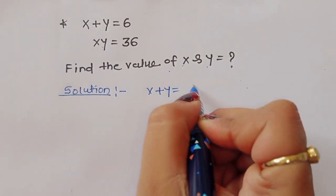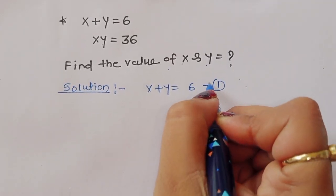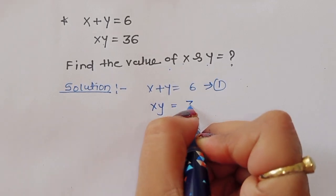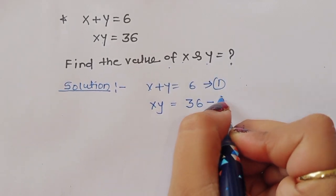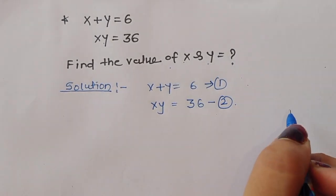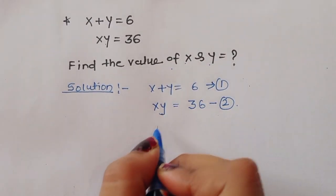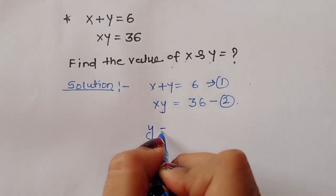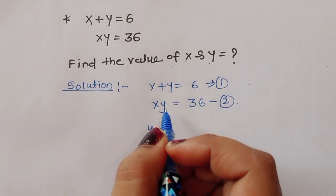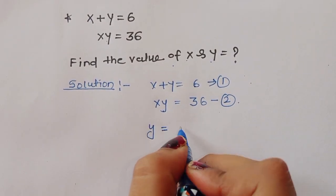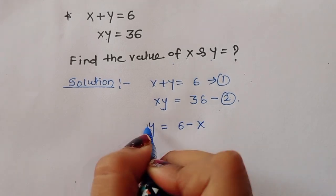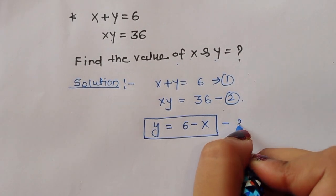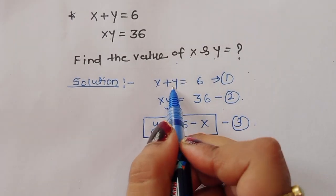x plus y is equal to 6 — this is equation 1. xy is equal to 36 — this is equation 2. Now we can find out the value of y: y is equal to 6 minus x, from equation 1. This is equation number 3.